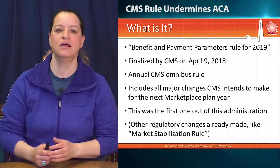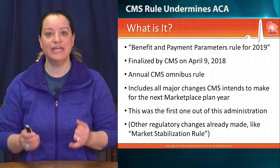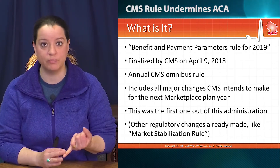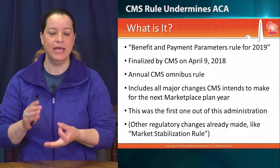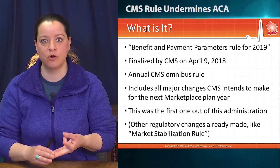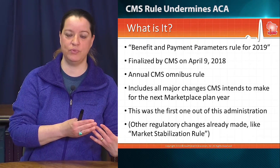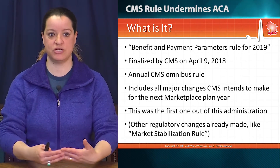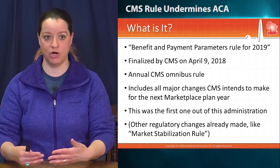The Trump administration snuck in some of their market reforms, which dramatically undermined things like the duration of the open enrollment period, how special enrollment periods were supposed to work, and things like network adequacy and how that was going to be reformulated. So that already happened in advance of the last open enrollment period, and now we're seeing this omnibus rule for the first time, which makes dramatic changes to the marketplace.